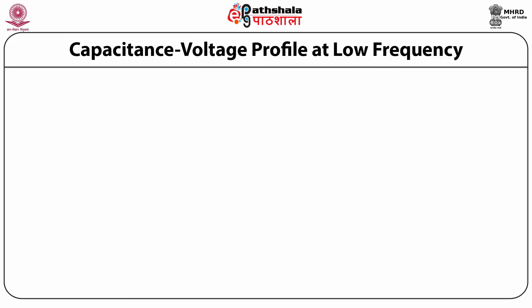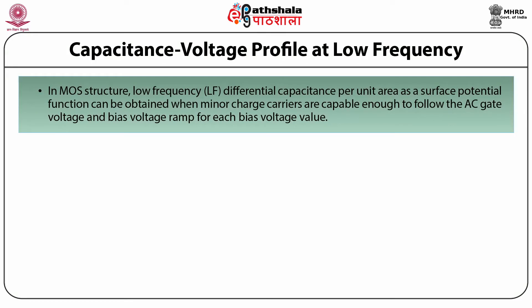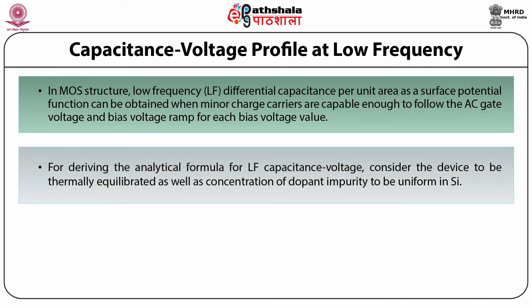We will next study the capacitance voltage profile at low frequency. In a MOS structure, the low frequency differential capacitance per unit area as a surface potential function can be obtained when minor charge carriers are capable enough to follow the AC gate voltage and bias voltage ramp for each bias voltage value. For deriving the analytical formula for LF capacitance voltage, the device is considered to be thermally equilibrated and the concentration of dopant impurity is assumed to be uniform in silicon.